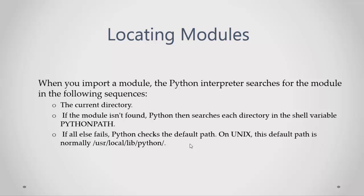And if the module isn't found, Python checks the default path. On Unix, the default path is /usr/local/lib/python.